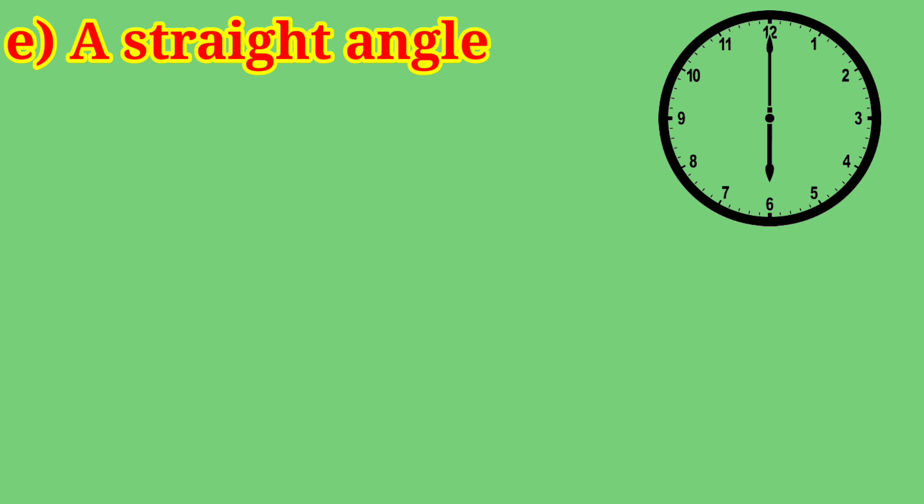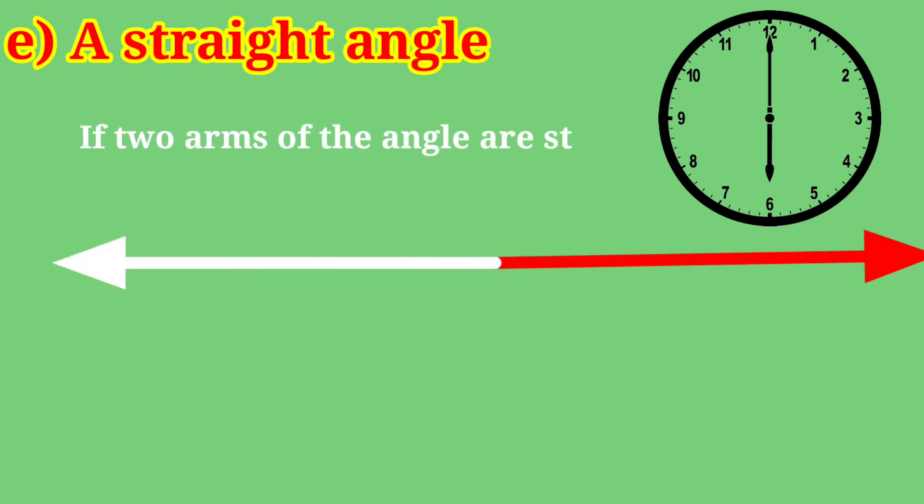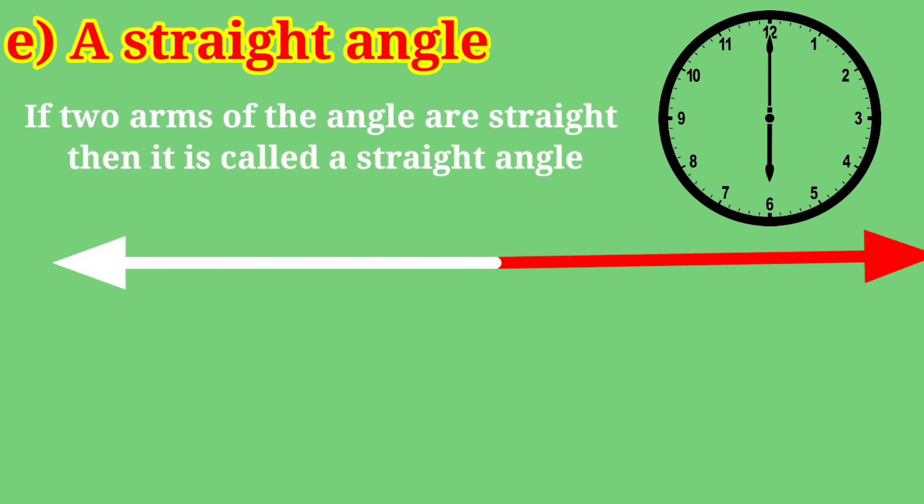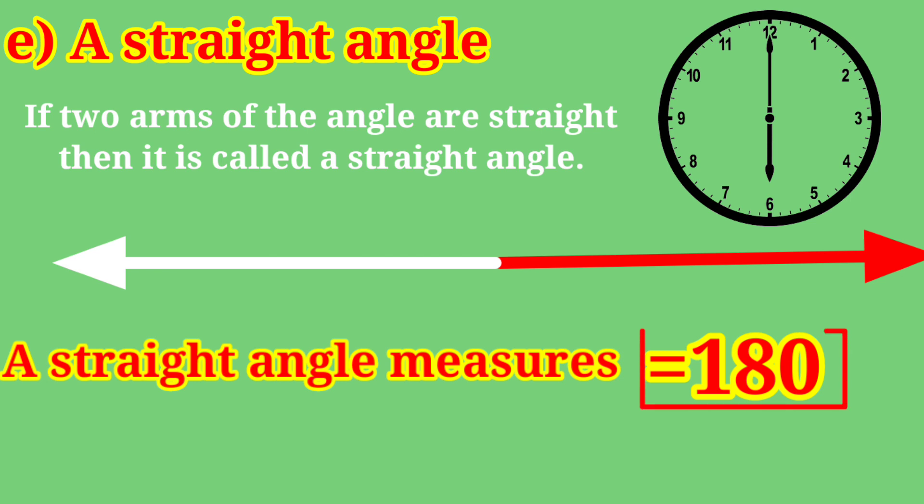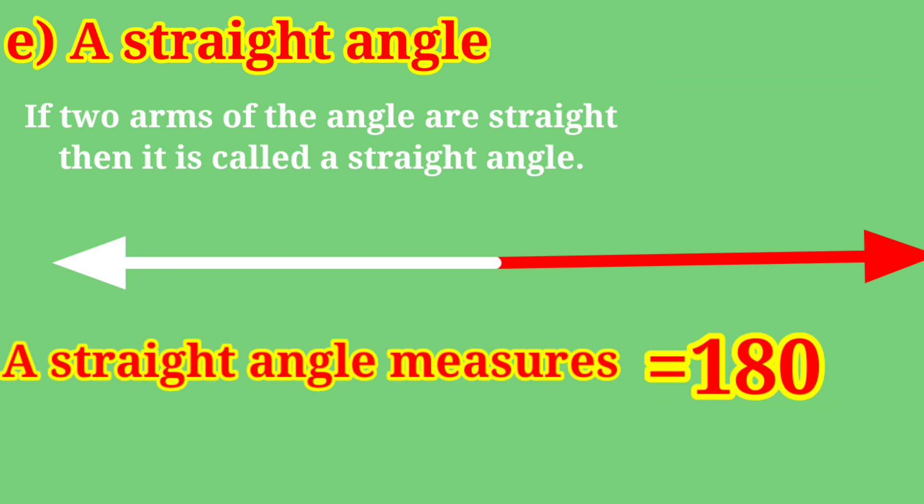A straight angle. If two arms of the angle are straight, then it is called a straight angle. A straight angle measures 180 degrees.